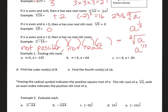Finding nth roots: find the cube root of negative 125. What number, when you multiply it by itself three times, gives you negative 125? The answer is negative 5, because negative 5 times negative 5 times negative 5 is negative 125. Find the sixth root of 64. Because 6 is even, there are going to be two numbers — a positive and a negative. So the sixth root of 64 is plus or minus 2, because negative 2 to the 6th is 64 and 2 to the 6th is 64.